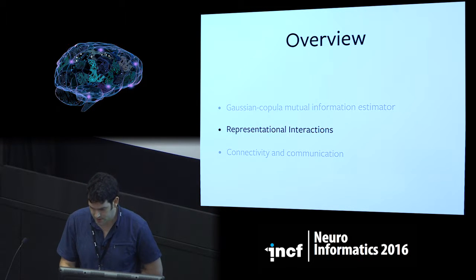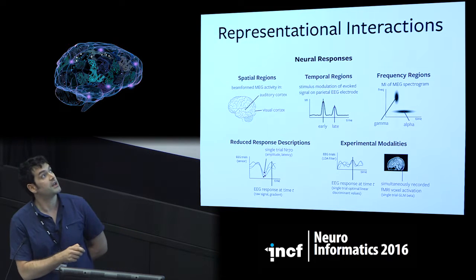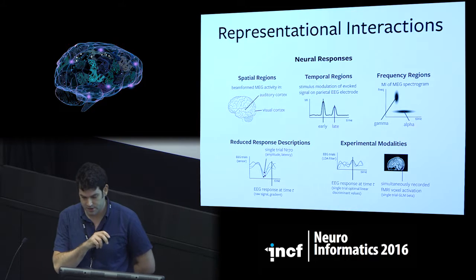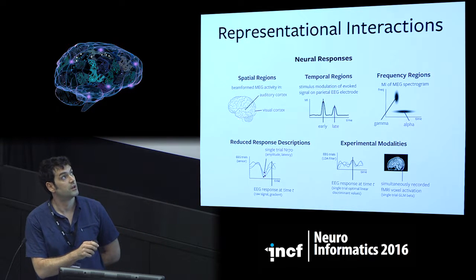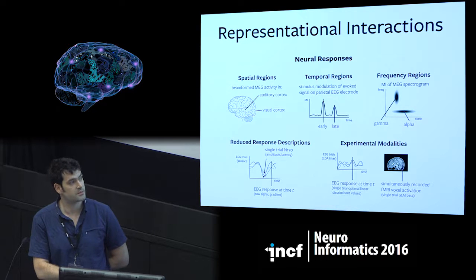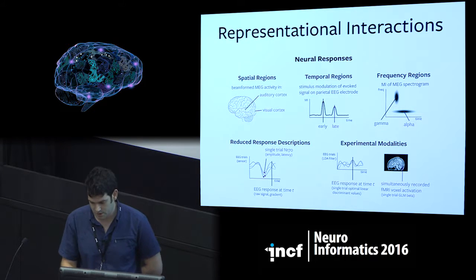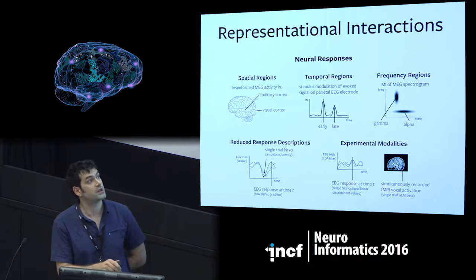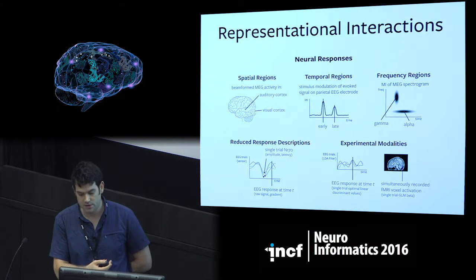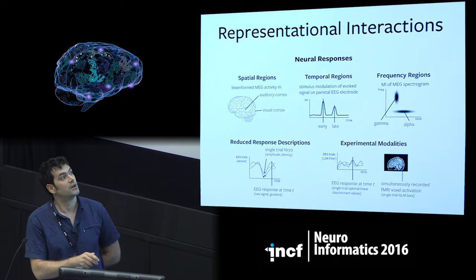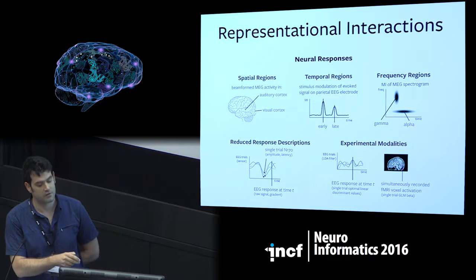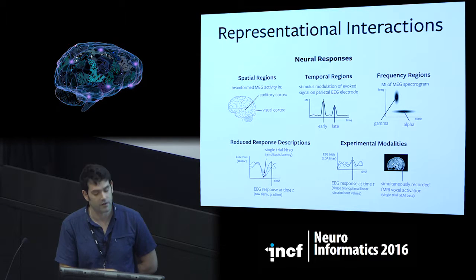I'm going to tell a little bit about representational interactions. In many cases, you might have two statistically significant modulations in two different responses, whether they're different cortical regions, different temporal regions, different frequency bands, or different signals like EEG and fMRI. In all of these cases, you might ask: to what degree are the modulations similar? If you observe one, does observing the other one add any more information, or is it overlapping, and in fact you get everything from the first one?